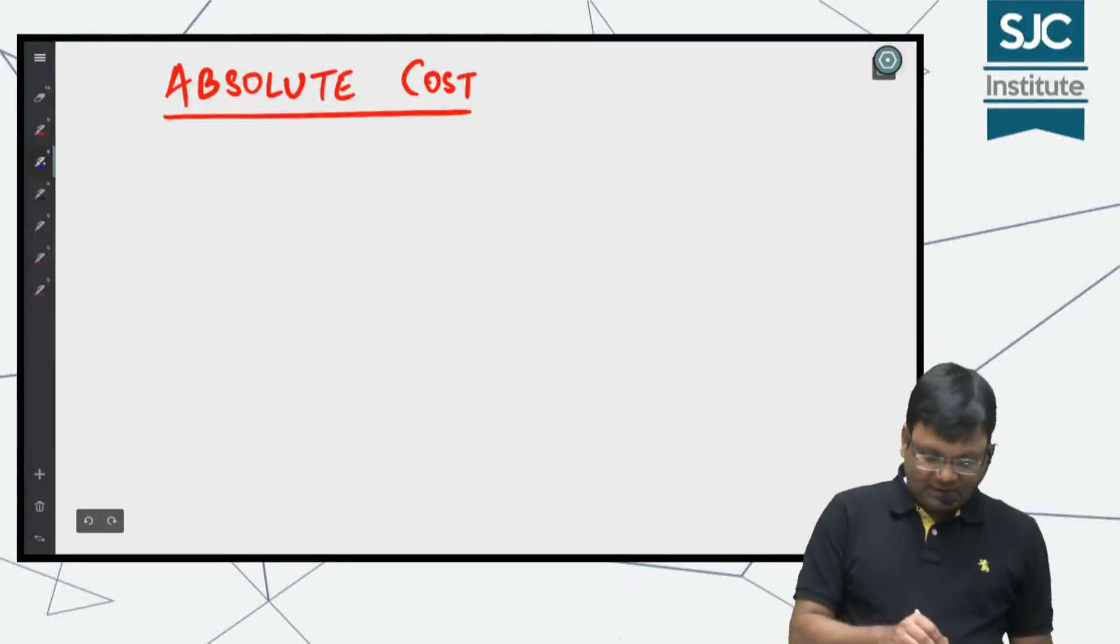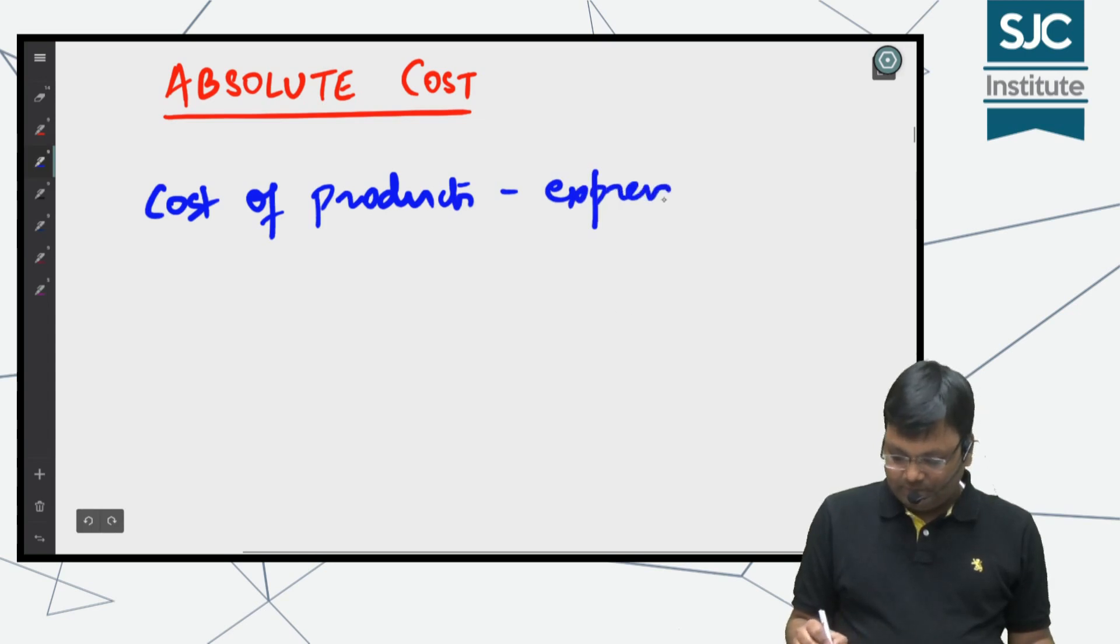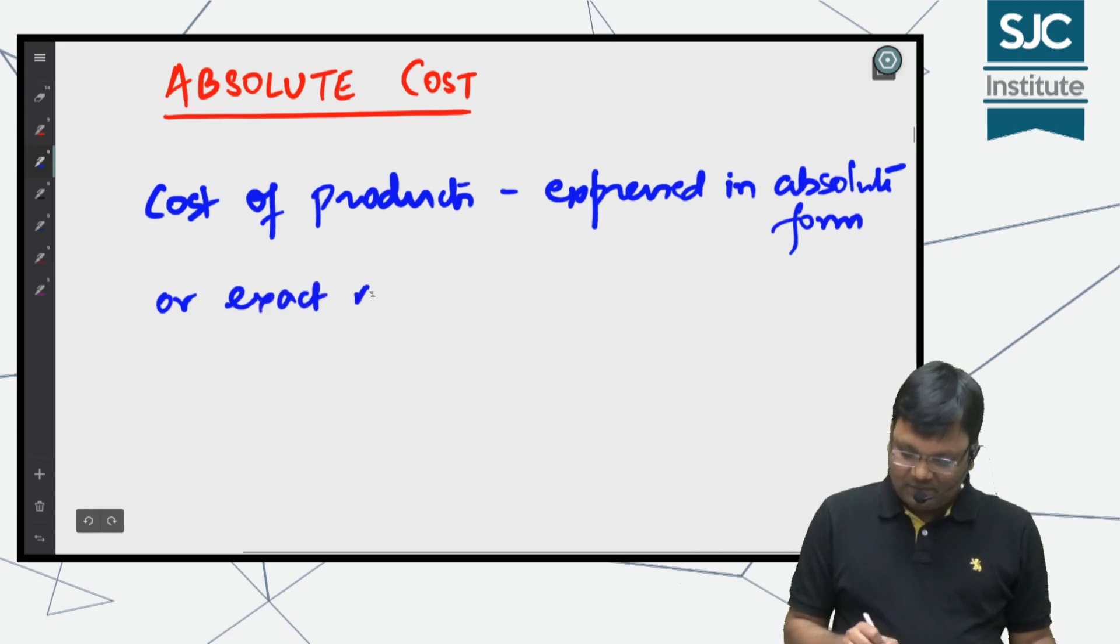Absolute costs are the cost of your product expressed in absolute form. What is absolute form? It's nothing but exact monetary terms.